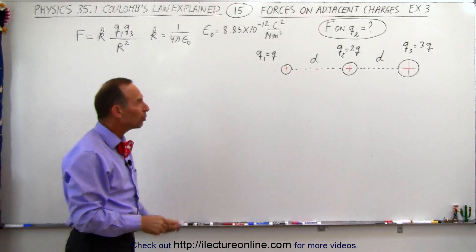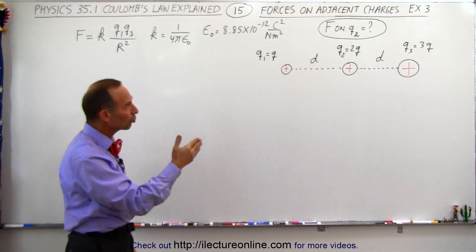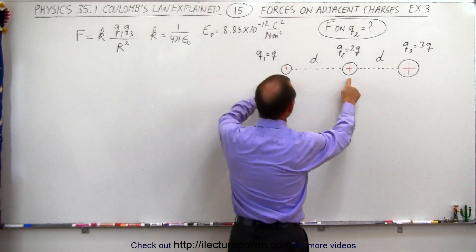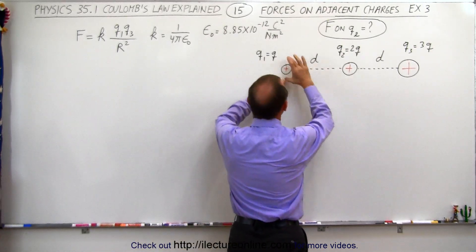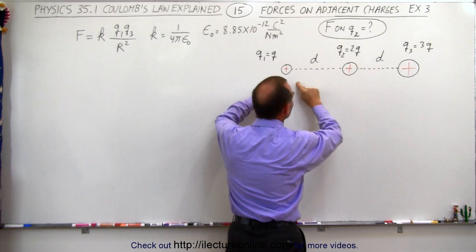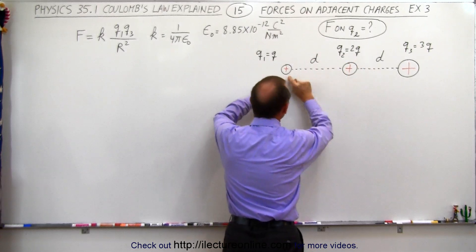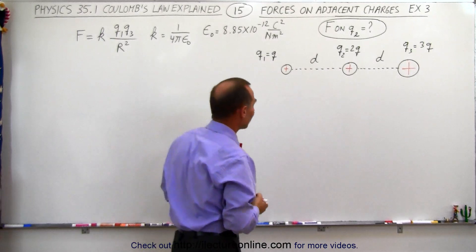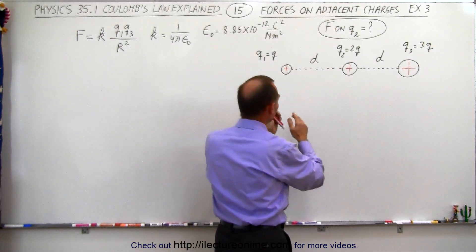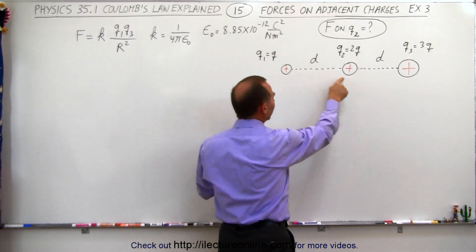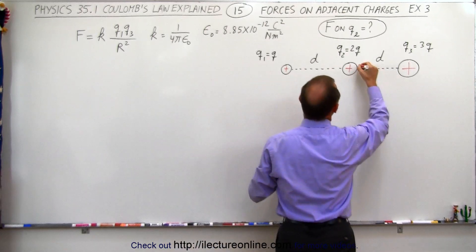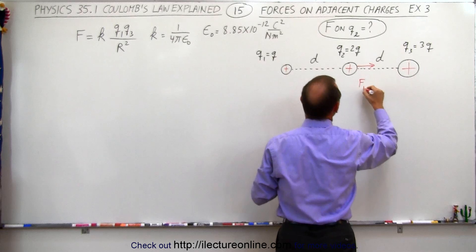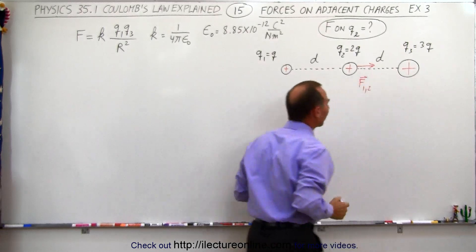Let's indicate the force between charge 1 and charge 2 on charge 2 — the effect of the two charges. How does this charge affect this charge? What will be the force on the second charge due to the presence of the first charge? You can see there's a force of repulsion, so this force will push in this direction. This would be the force F between 1 and 2, and of course it's a vector quantity.